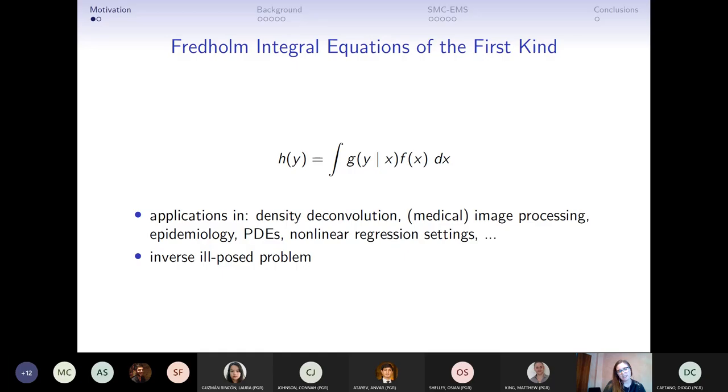The R0s as a counterpart to PDEs. And in statistics they're used in regression settings when we have confounders, and they are very popular in density deconvolution. So they do appear in all the fields, but they are also an inverse ill-posed problem in the sense that the solution f might not be unique. And even if it is, it is very unstable to small changes in h. So there really is a need to find good methodology to solve this type of integral equations.